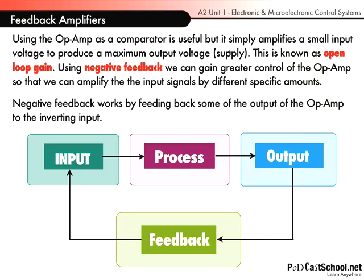The op-amp as a comparator is useful — we've talked about this before — because it simply amplifies a small input voltage to produce a maximum output voltage. You saw that in the last podcast. This is known as open loop gain. Now, using negative feedback, we can gain greater control of the op-amp so that we can amplify the input signals by different amounts. This is what we're going to look at in this podcast.